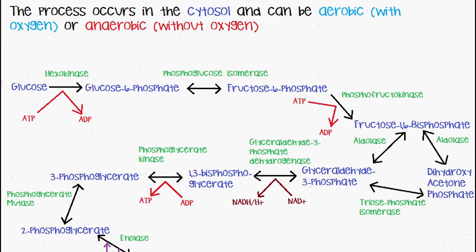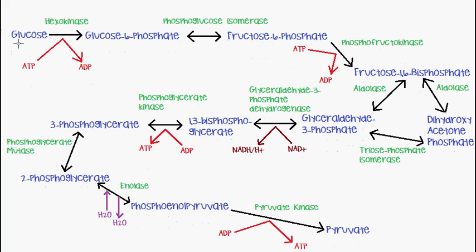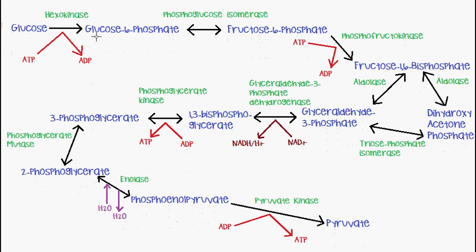Looking at the actual reaction: we start with a glucose molecule, which is converted into glucose-6-phosphate by the addition of a phosphate group. The enzyme that catalyzes this reaction is hexokinase, and it is non-reversible — it can only go in one direction. The phosphate group comes from ATP, which donates one of its phosphate groups to form ADP.